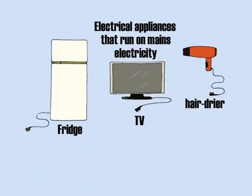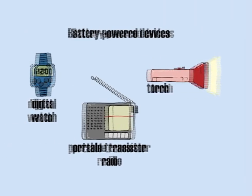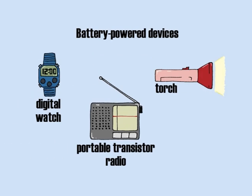This is important when handling appliances which run on mains electricity. Mains electricity is very powerful, so it is dangerous to come into contact with it. That is why you should only use battery-powered devices when experimenting with electricity.